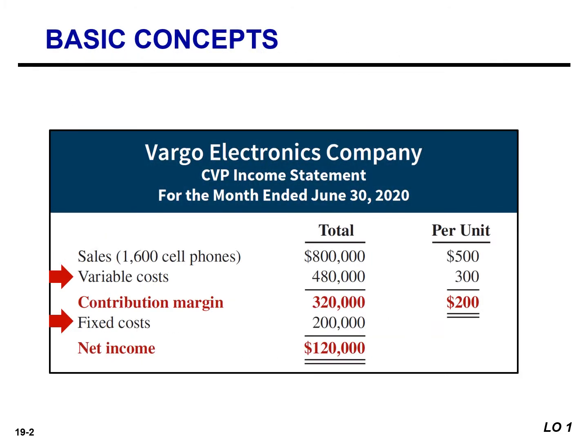The CVP income statement classifies costs as variable or fixed and calculates a contribution margin. Contribution margin is the amount of revenue remaining after deducting variable cost. It can be thought of as the amount available to cover fixed costs as well as generate income. It is often stated both as a total amount and on a per unit basis.